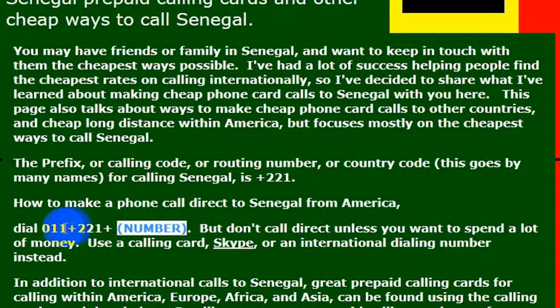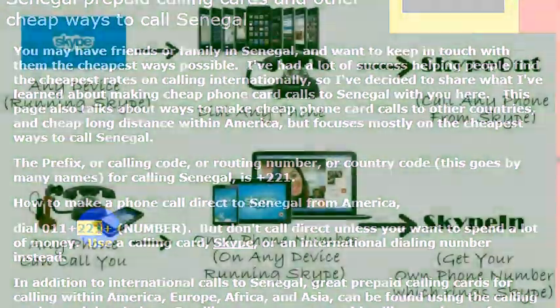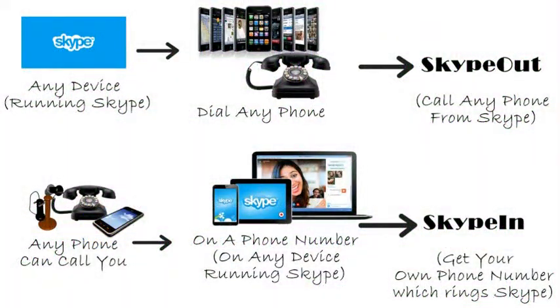So the country code, again, for Senegal is 221. But I wouldn't really recommend calling direct — your phone company will charge you a lot of money.